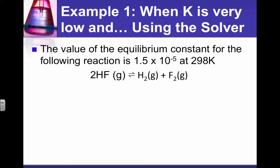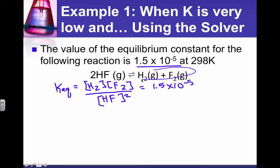In this first example, when the equilibrium constant is very low, and we use the solver to solve the problem, actually I'm going to show you how to use the solver and how to use what's called the small x assumption. We'll do it both ways for this one. So the value of the equilibrium constant for the following reaction is 1.5 times 10 to the minus 5. And I think we can all agree that this is a very, very small number.